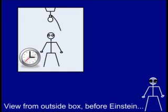Scenario 2: The view from outside the box before Einstein. The bulb is switched on, once again.